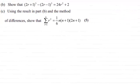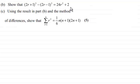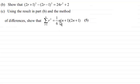Hi there. In part b we had to show that (2r+1)³ - (2r-1)³ = 24r² + 2. Now for part c, it says using the result in part b and the method of differences, we've got to show that the sum of r² from r=1 to n equals (1/6)n(n+1)(2n+1).